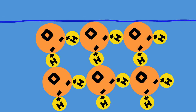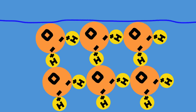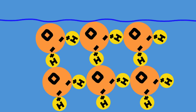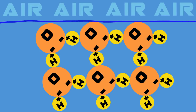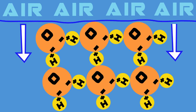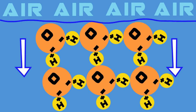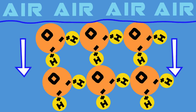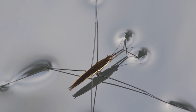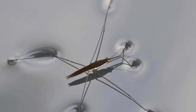At water's surface, its molecules are only attracted to the water molecules below and to the sides of them, as there is only air above these molecules. So the surface molecules of a body of water are pulled down, creating a more stable, stronger environment. That is why certain animals like the water strider can actually walk on the surface of water.